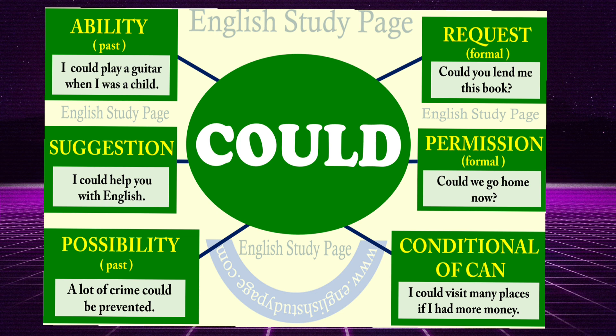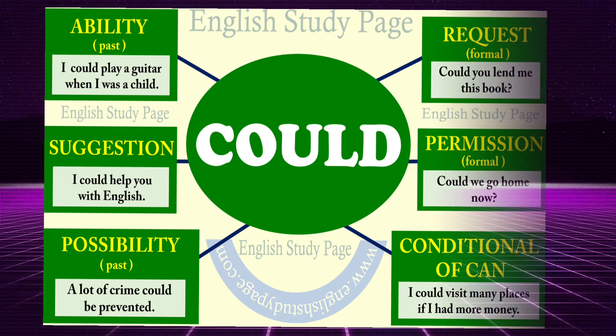Could can be used for ability, request, suggestion, permission, possibility, and as the conditional of can. Could can be used for all these situations. For example: 'I could visit many places if I had money' — that's the second conditional. 'Could we go home now?' — for permission. 'Could you lend me this book?' — it is more formal than can for requests. 'I could play guitar when I was a child' — ability.